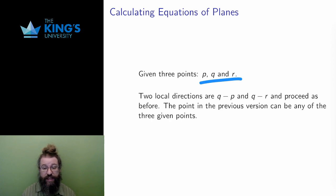From the three points, I can take any subtraction of two of them to get local directions, say, Q minus P and Q minus R.